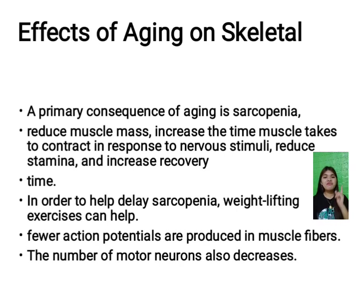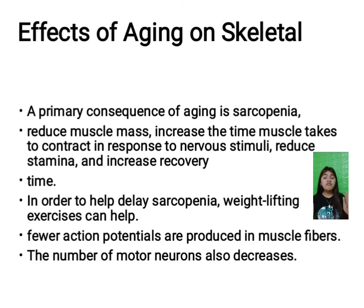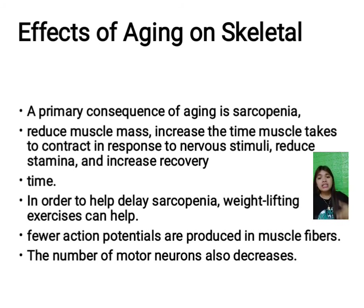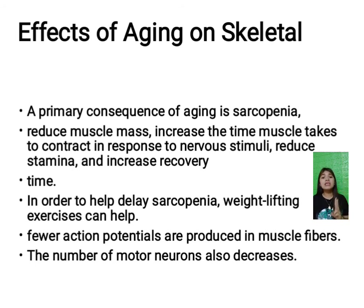A primary consequence of aging is sarcopenia, or muscle atrophy — the age-related reduction in muscle mass and regulation of muscle function. Aging skeletal muscle undergoes changes that reduce muscle mass, increase the time muscle takes to contract in response to nervous stimuli, reduce stamina, and increase recovery time.